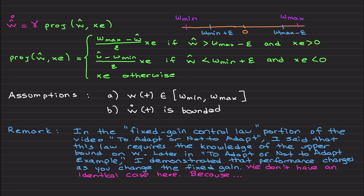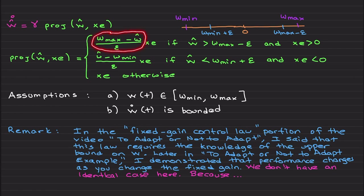...meaning your ŵ reaches and exceeds the w_max minus ε bound, and x·e is positive meaning you are moving toward the upper limit — then this decreases the learning process. In the worst case when ŵ = w_max, this term becomes zero so adaptation stops. Think of the projection operator as a fancy saturation operator: it won't let your ŵ estimate exceed this domain.